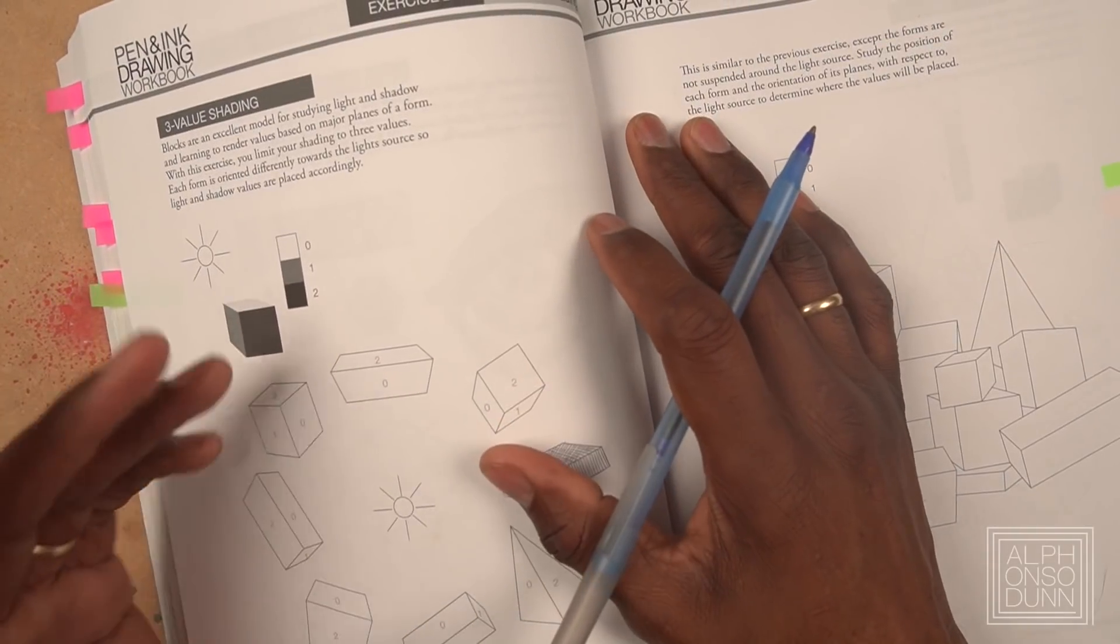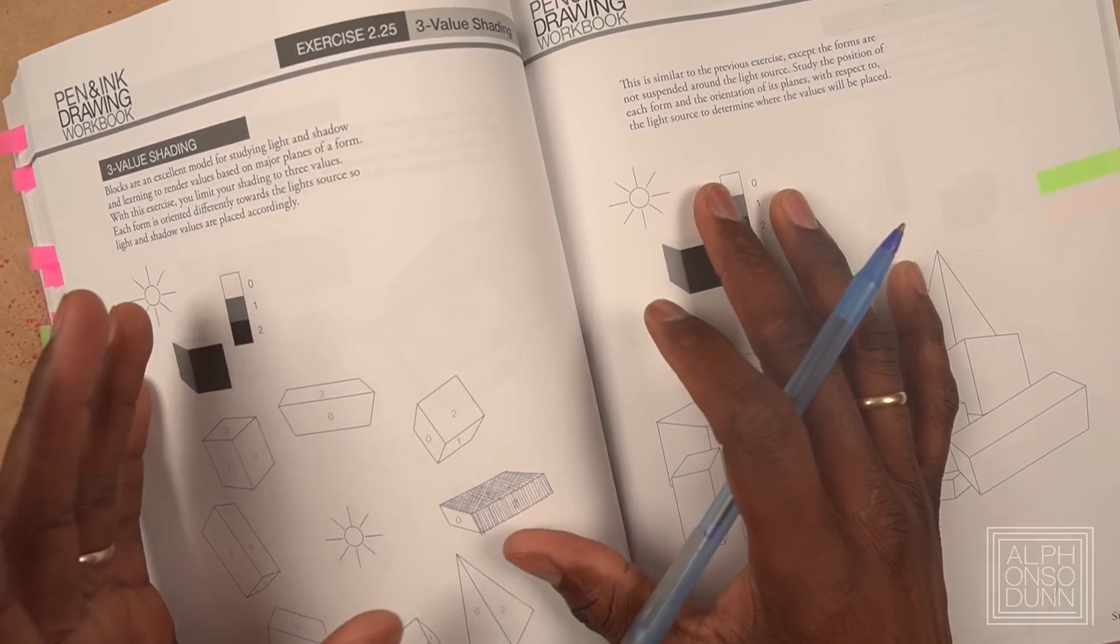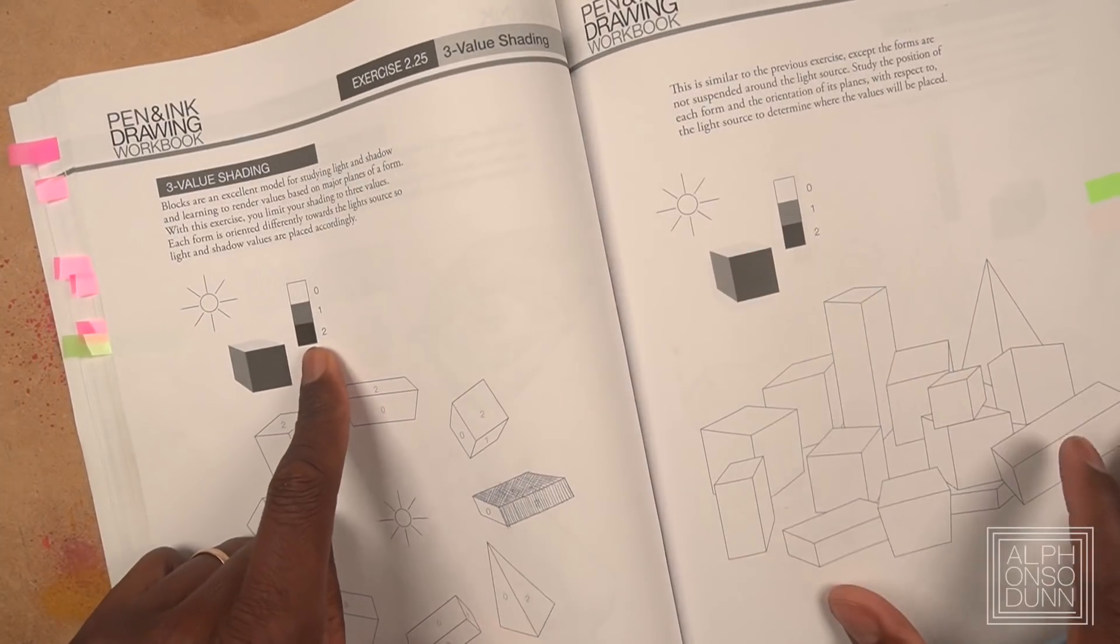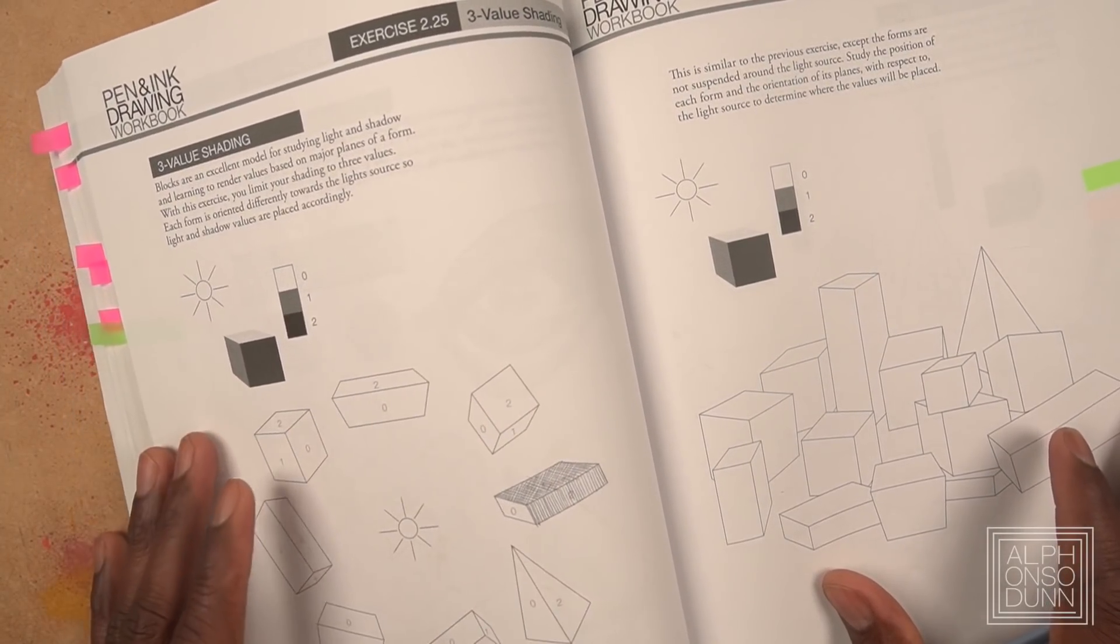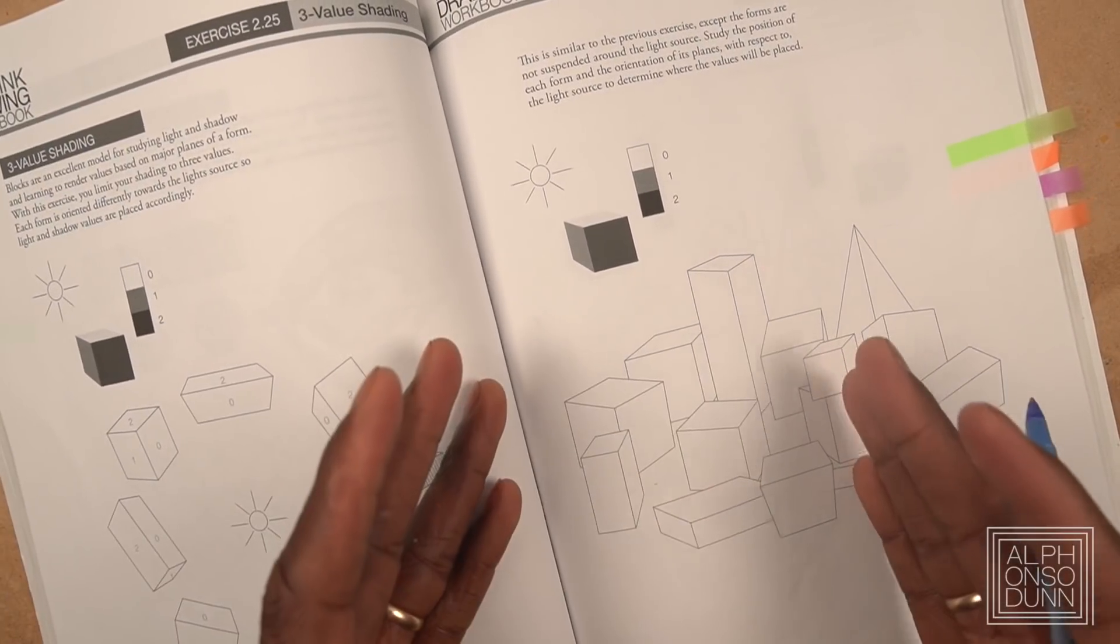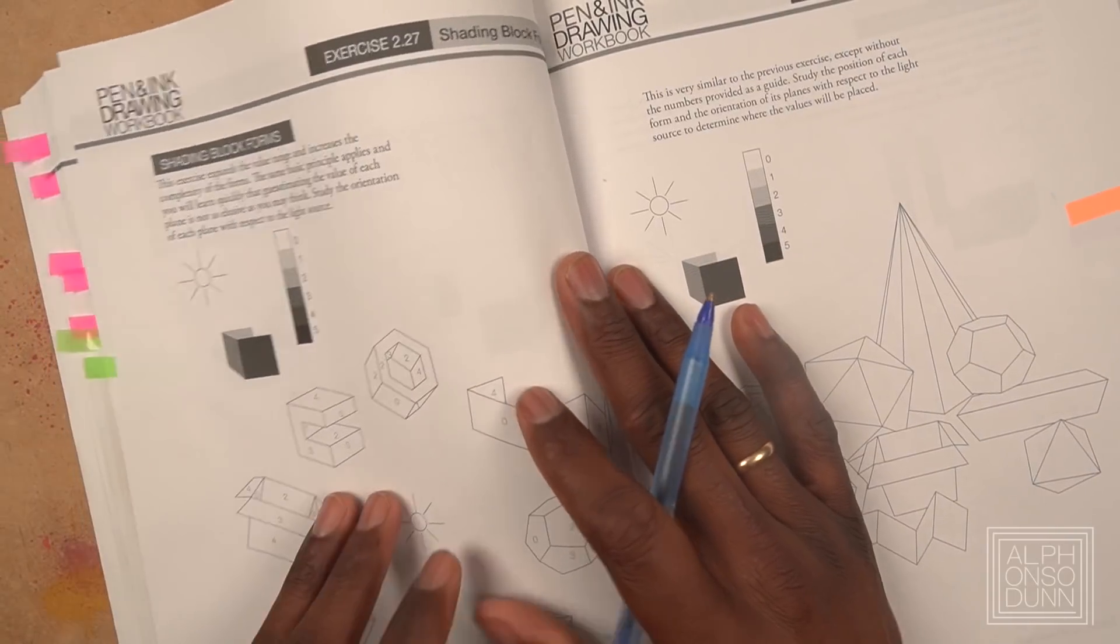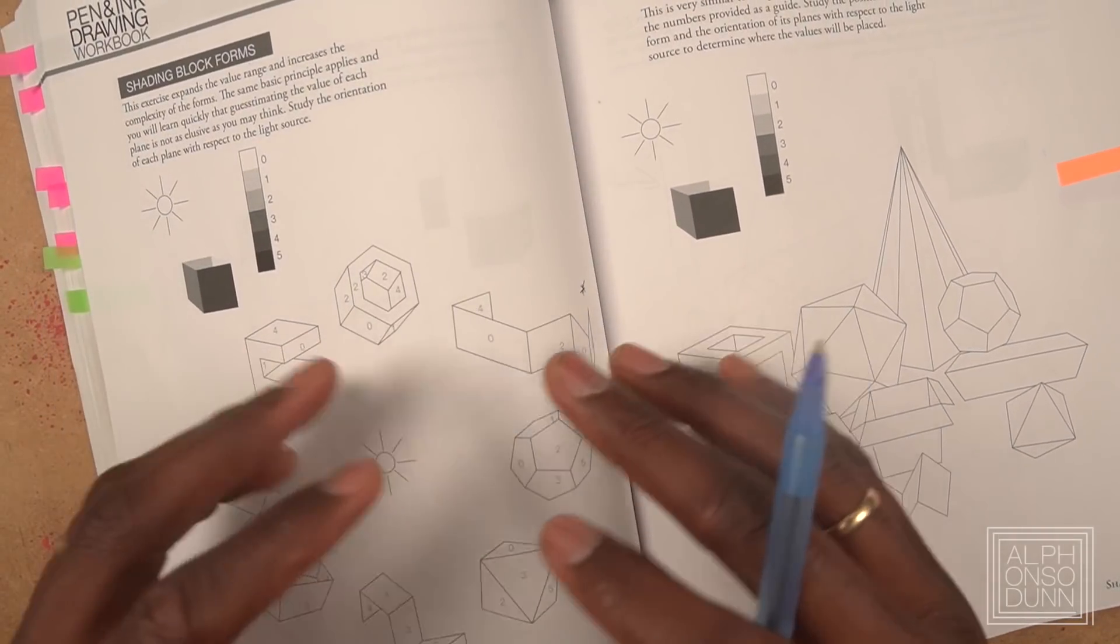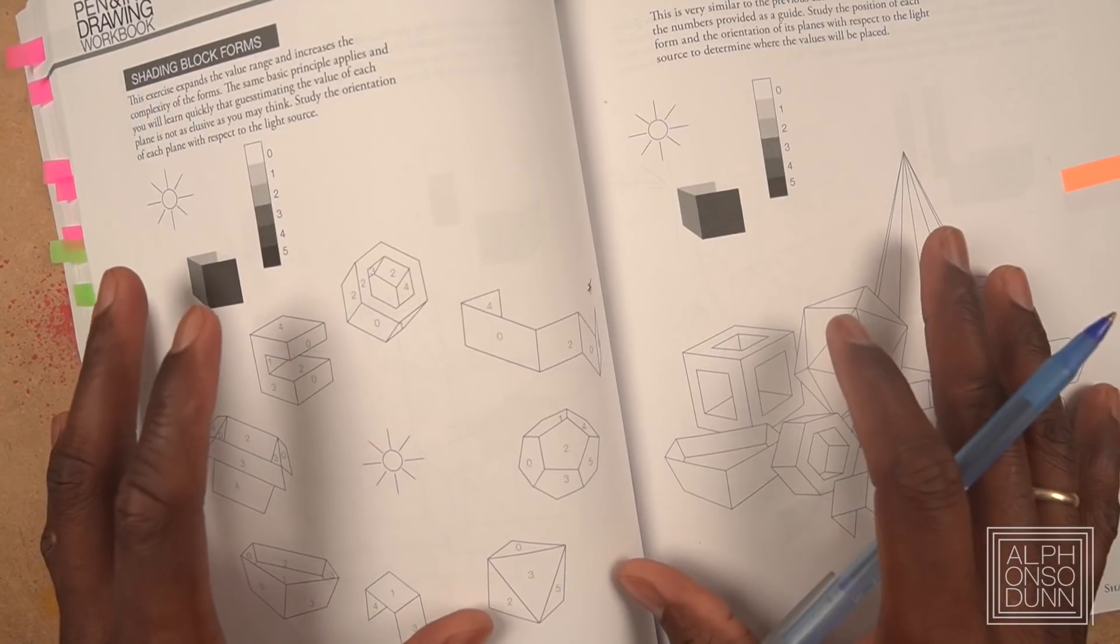So the exercises in my workbook from 2.25 to 2.30 focus on shading block forms. First with only three values on simple blocks arranged radially around the light source and then composed together and lit by one light source. And then in the next exercise, the block forms are more complex and the value range extends to six, but the approach is essentially the same.